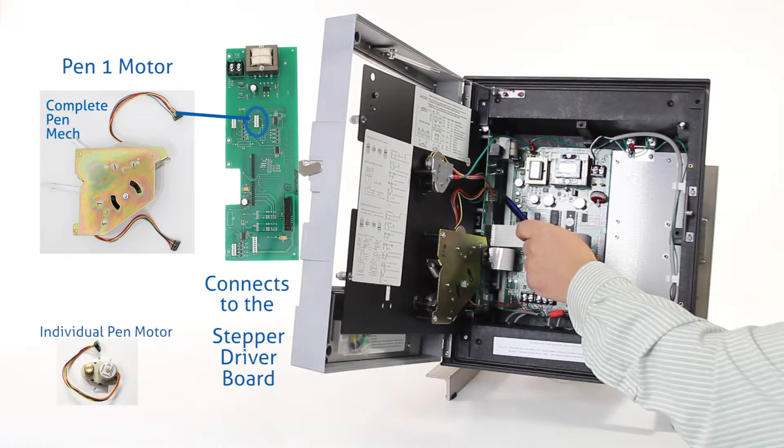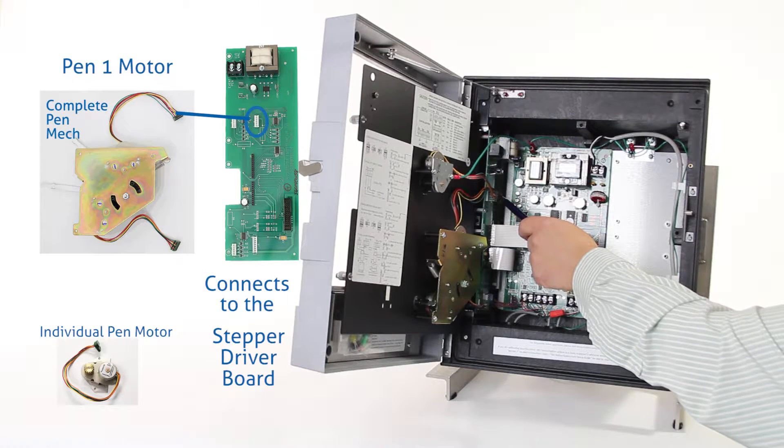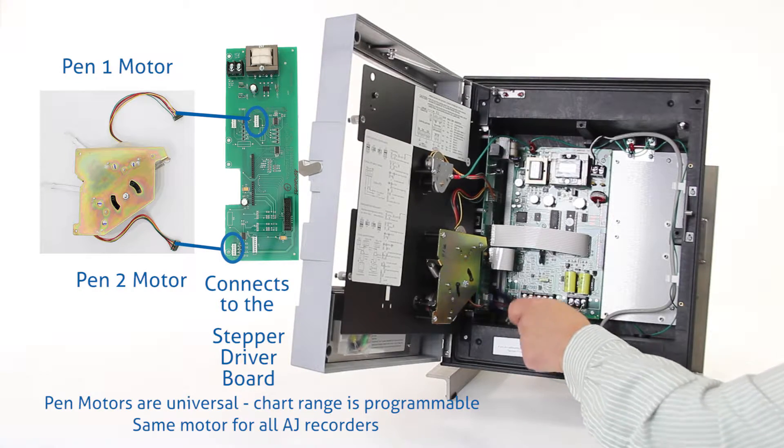Then we have our pen one motor which plugs in directly behind the chart motor on the top of the driver board, and our pen two plugs in down on the bottom side of the motor driver board.